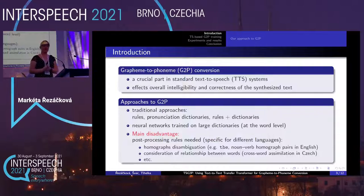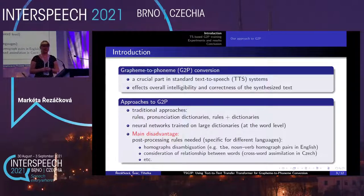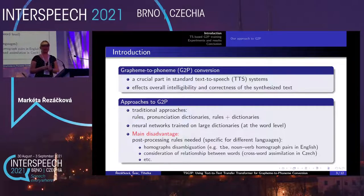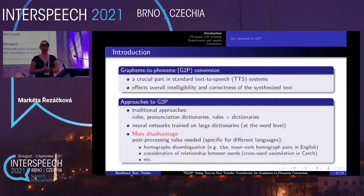In general, a grapheme-to-phoneme model is a crucial part in almost all standard text-to-speech systems. It highly affects the overall intelligibility and correctness of the synthesized speech, and it also affects the voice-building process because inappropriate phonetic transcription is not good for segmentation.